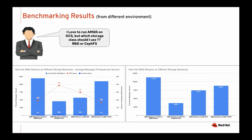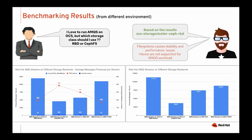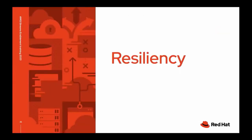Another question we received is: with OCS you have two storage classes — block storage and file system storage. Which one should I use for Kafka clusters? As Jakob pointed out, NFS or read-write-many volumes are not recommended. You could technically run Kafka on file systems, but in the longer run there are stability problems due to file system locking. If you're designing on a Kubernetes-native environment you should use block storage provided by OCS — file systems cause stability and performance issues for Kafka.